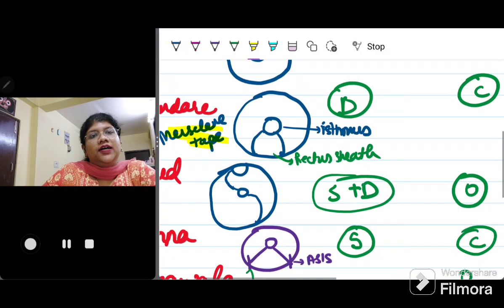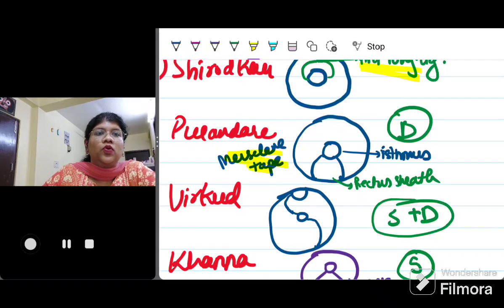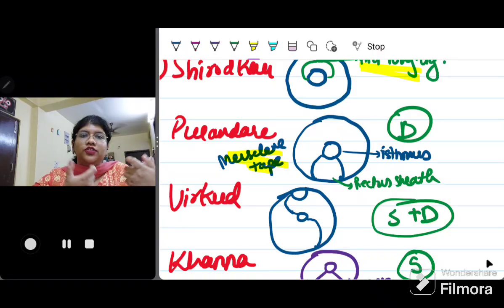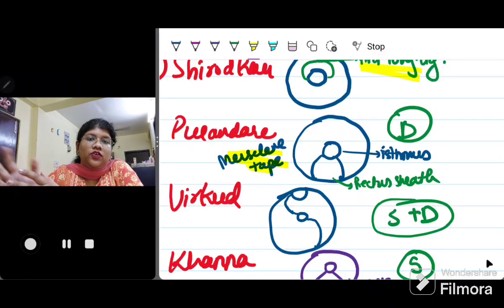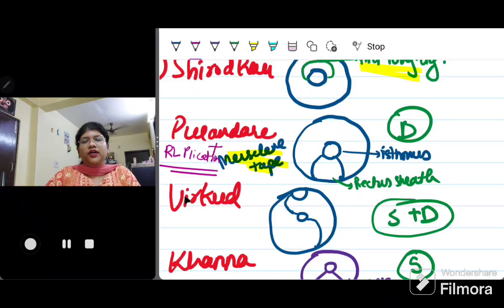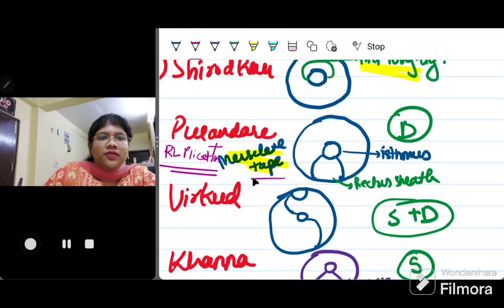What modification was done later to this Purandare sling was, since it was causing the uterus to undergo retroversion, they have introduced something called as round ligament plication. In round ligament plication, you are basically going to cut short the round ligaments. When the round ligaments are attached to the uterus, it causes the uterus to come anteriorly, so it is preventing the retroversion of the uterus. One thing that you can remember is that there is a modification of this round ligament plication. This is something additionally which can be done with Purandare. You should remember that we use mersilene tape, also rectus sheath can be used as a sling along with mersilene tape.